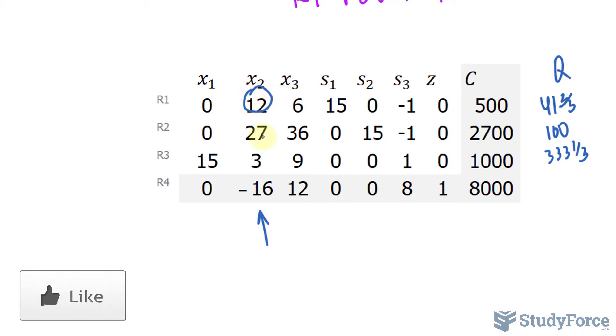And we'll use 12 to make 27, 3, and negative 16 all into zeros. Let's start by making this 27 into a zero. To do that, we'll take row 1, multiply it by 27, minus row 2 times 12. This will serve as our new row 2.